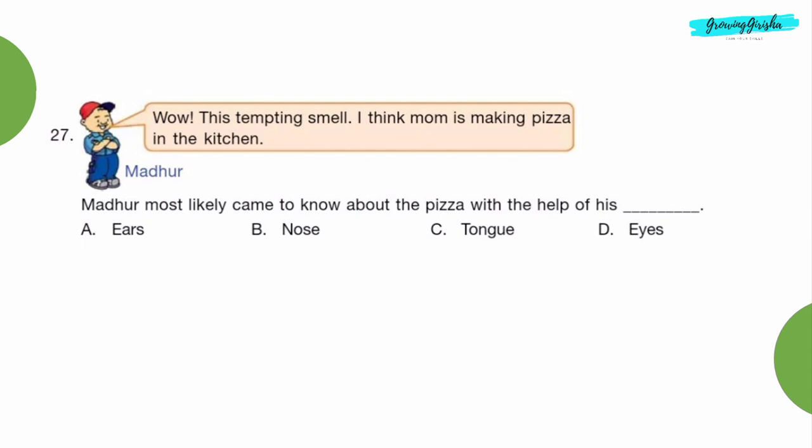Question 27: Madhur, wow this tempting smell! Well I think mom is making pizza in the kitchen. Madhur most likely came to know about the pizza with the help of his dash. Option B, nose.